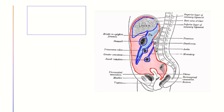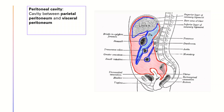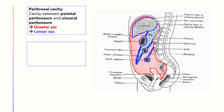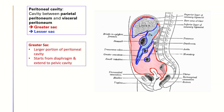Now, let's start talking about the greater and lesser sac. The peritoneal cavity is essentially a cavity bound by the parietal peritoneum and visceral peritoneum. It can be further divided into the greater sac and lesser sac. The greater sac, shaded in red here, is the larger portion of the peritoneal cavity which starts from the diaphragm and extends to the pelvic cavity.